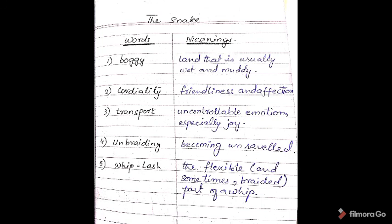The next word is 'unbraiding,' meaning becoming unrevealed or untwisted. And 'whiplash' refers to the flexible and sometimes braided part of a whip. So these are the word meanings for the poem.